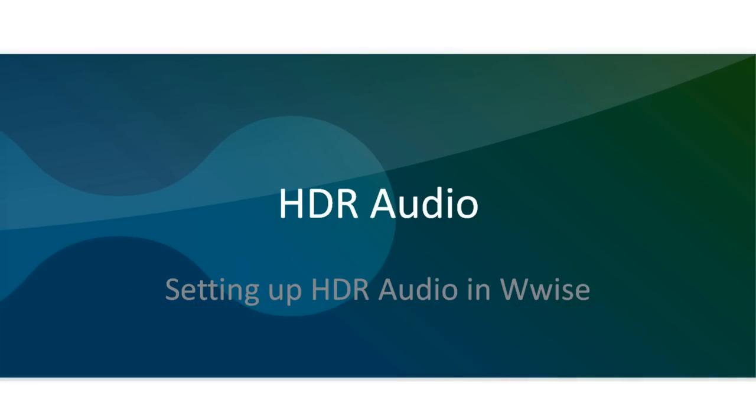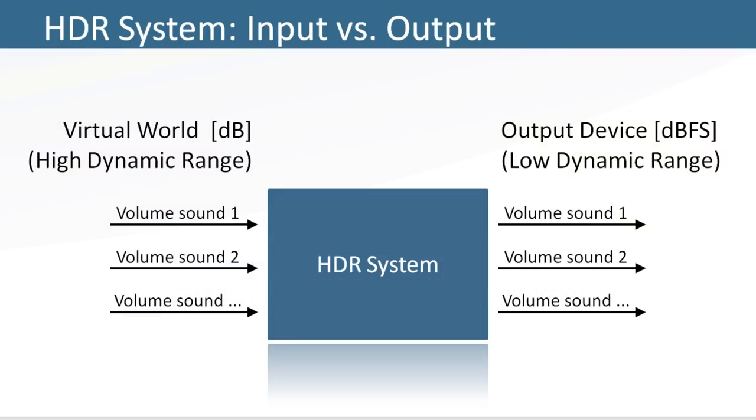The first concept to consider with HDR audio is that sounds prior to the HDR bus are assigned high volume values in a virtual mixing environment using an arbitrary decibel scale. On the output side of the HDR system, the volumes are then converted to standard volumes in dBFS.